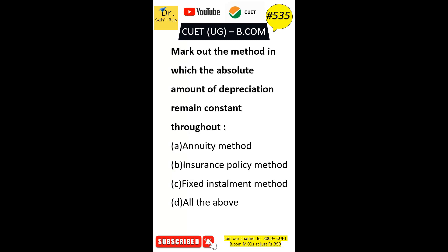Mark out the method in which the absolute amount of depreciation remains constant throughout. Option A: annuity method. Option B: insurance policy method. Option C: fixed installment method. Option D: all of the above. The correct answer is Option D — all of the above.